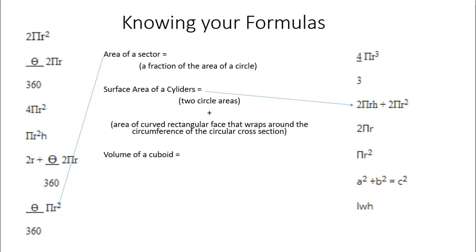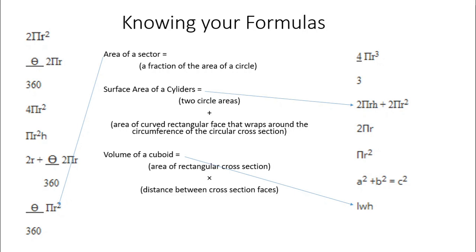The next one was the volume of a cuboid, and I'm not sure why this was such a big mistake on the assessment, but there were a lot of people with this mistake. Length times width times height — it's the area of a rectangle multiplied by the distance between those two congruent rectangles in the shape, same as with any other prism: the area of the cross-section multiplied by the distance between the cross-sections.